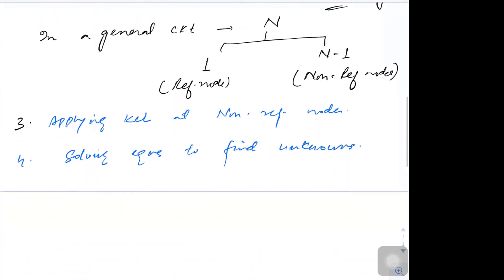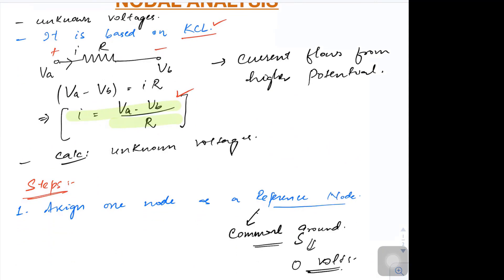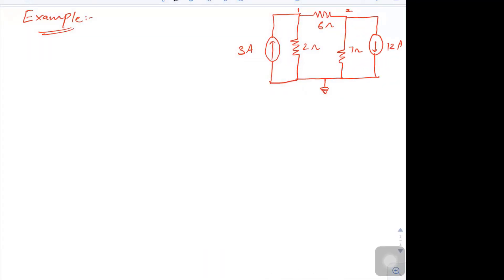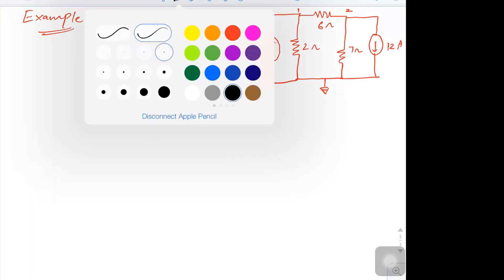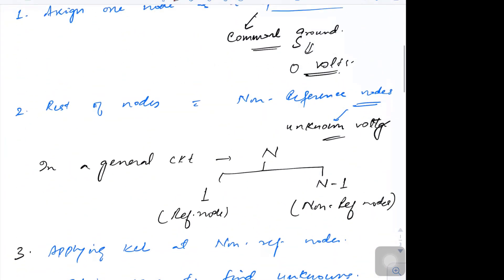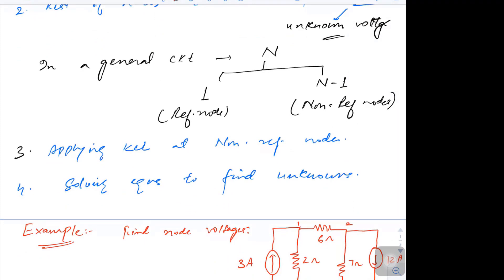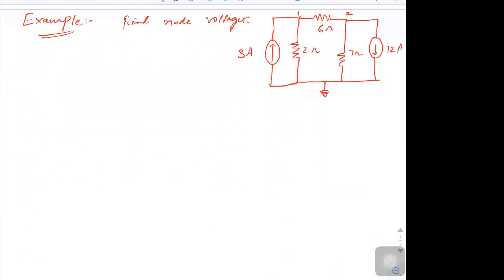These are the four steps we need to follow for solving any given problem. Let us understand this method by an example. The question is: we have to find the node voltages. We will apply these four steps — selection of reference node, selection of non-reference nodes, applying KCL, and getting the unknowns. My first step is assigning the reference node, which is already given here as zero volts.